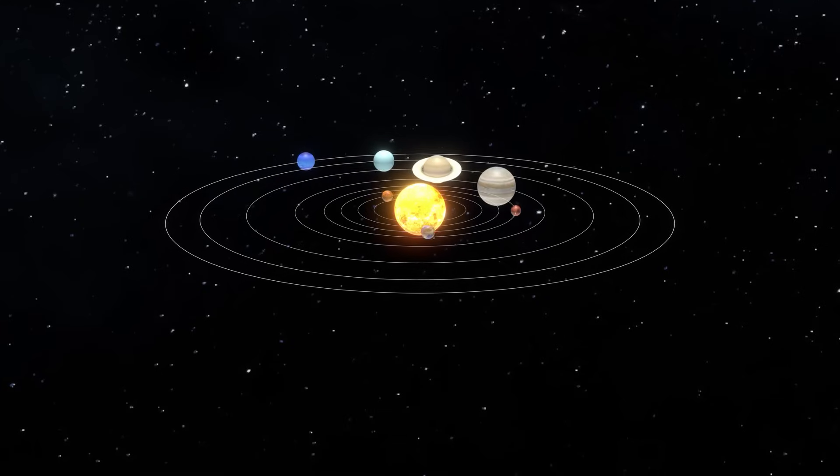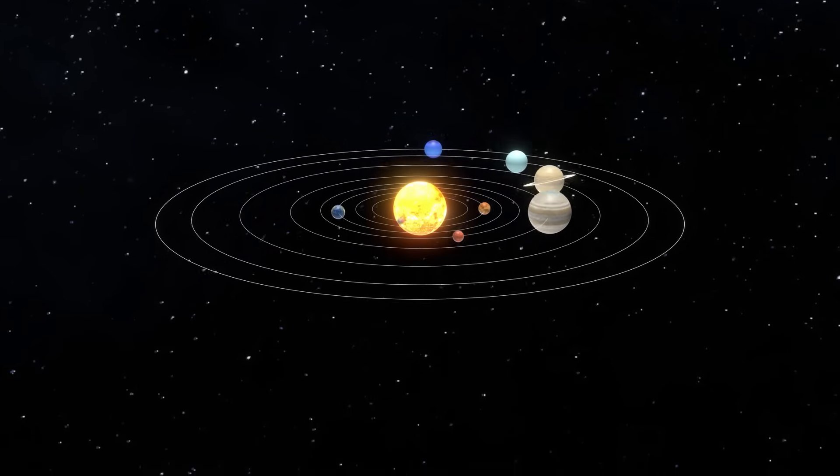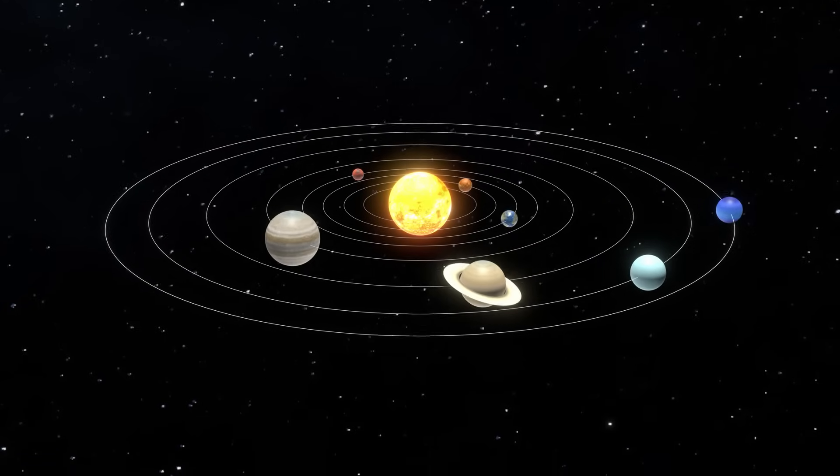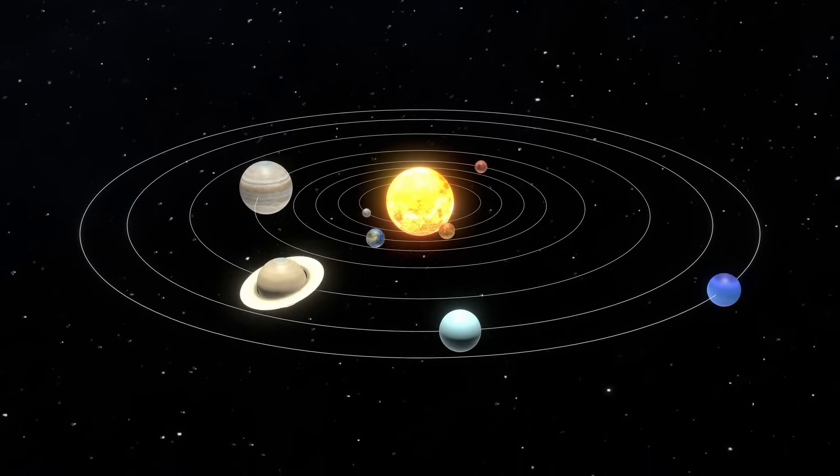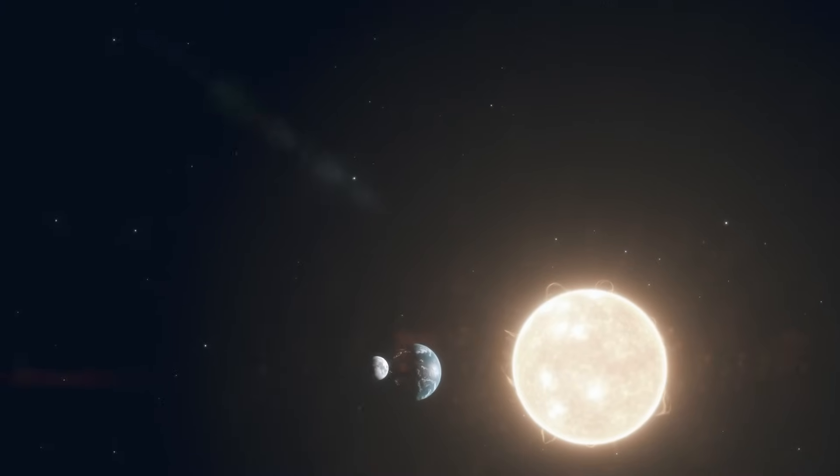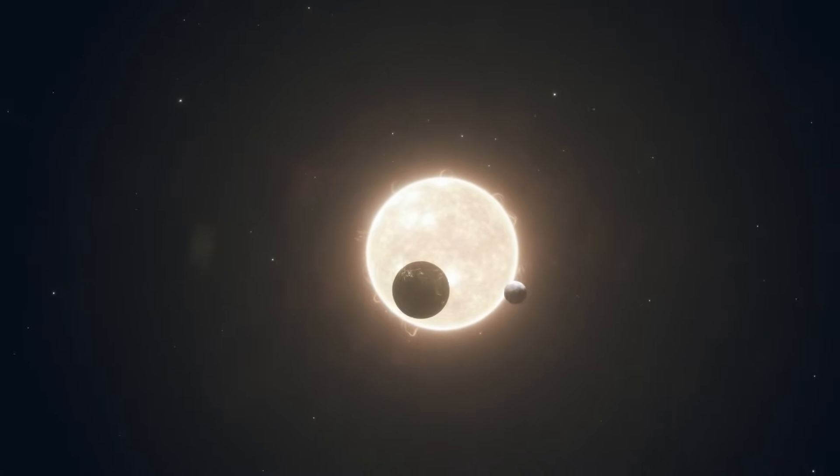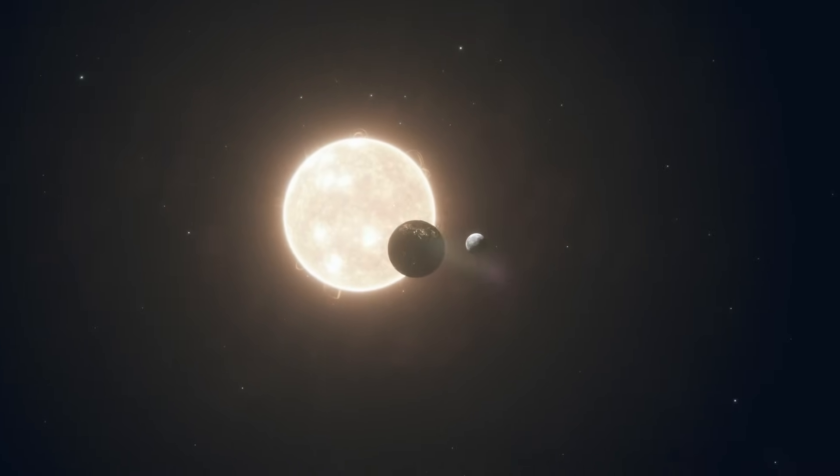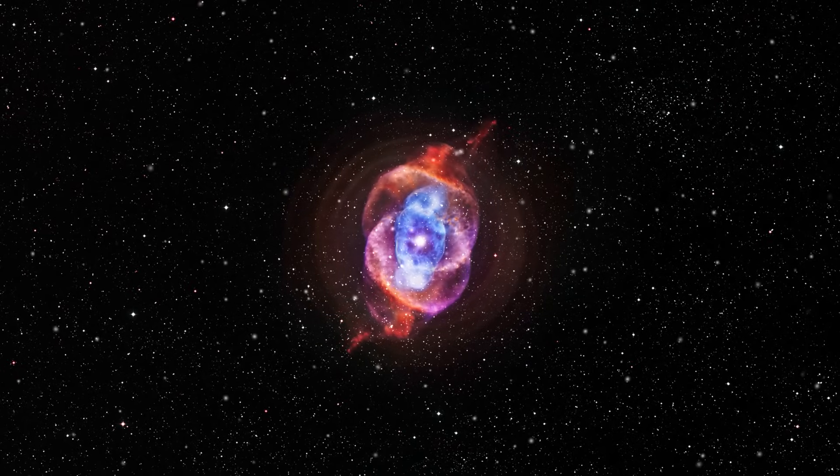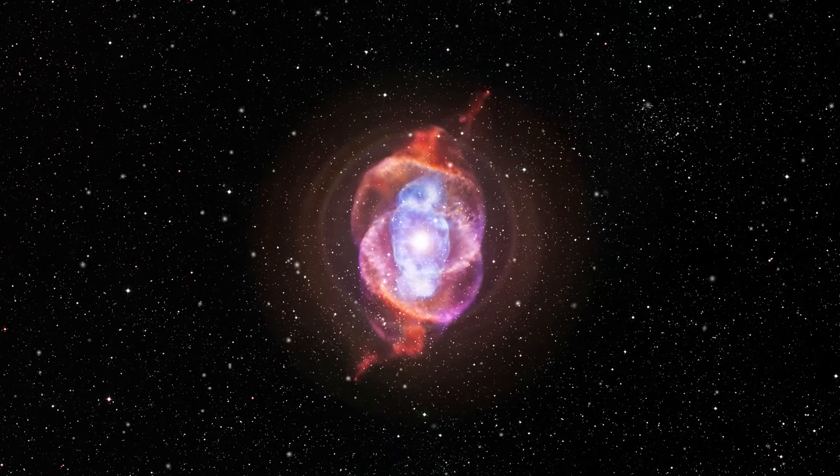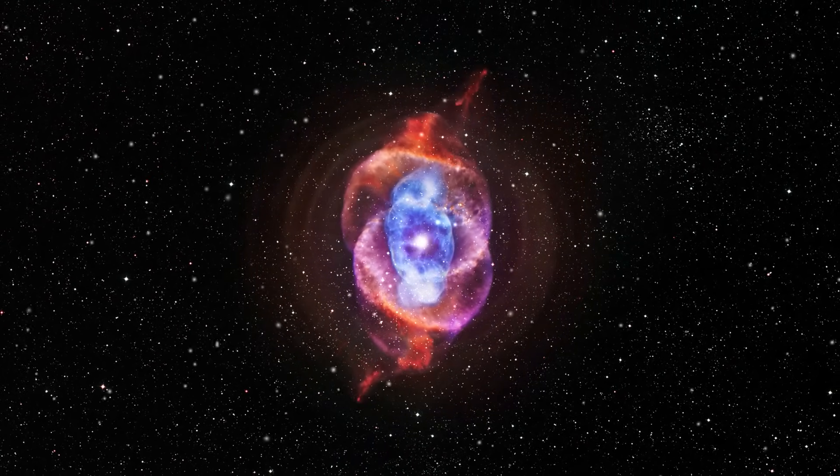If the reality of our solar system's orbital plane shocked you, what's lurking above and below that plane will leave you questioning everything you thought you knew about our cosmic neighborhood. The scientific establishment has conveniently focused your attention on the tiny sliver of our solar system where planets reside, while remaining suspiciously quiet about the vast spherical structures that make up most of our solar system's actual volume.